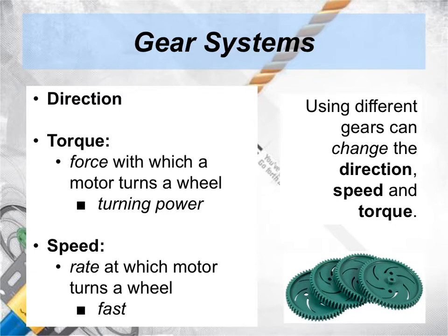Gears can change direction, meaning they can change from turning clockwise to turning counterclockwise. You'll see that when the gears and wheels work together. The next part is what's called torque. Torque is the force with which a motor turns a wheel. This is what we call turning power. In physics class you'll take a look at what torque is, but I just want you to remember that torque is a fancy word for turning power.